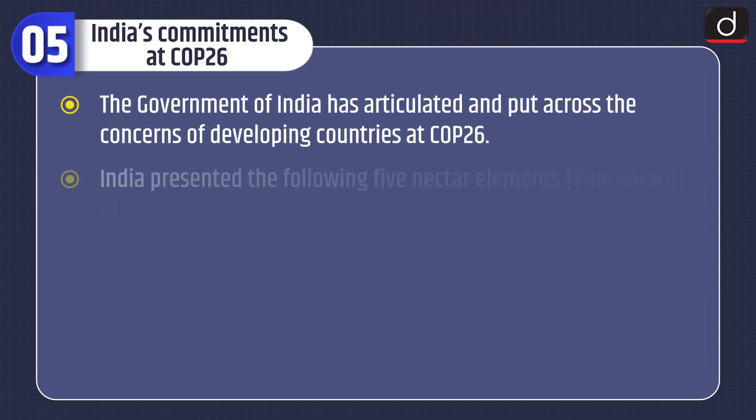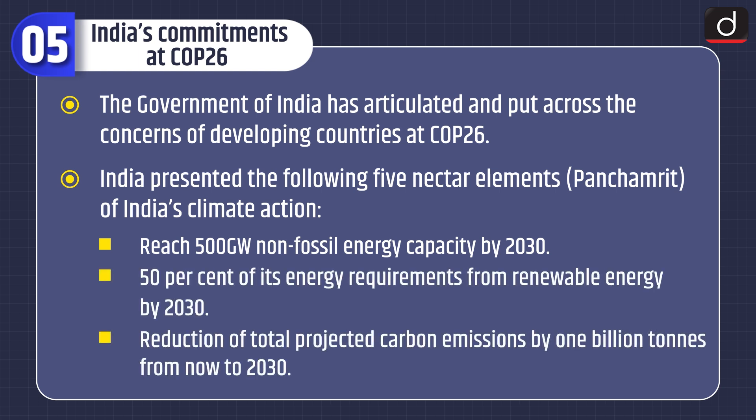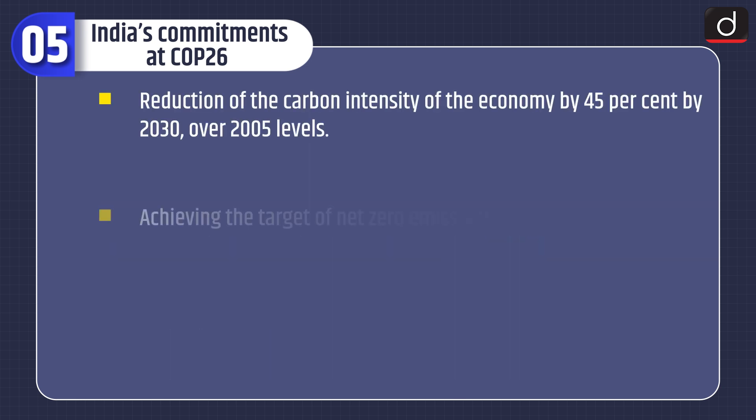Now let's discuss India's commitments at COP26. The Government of India articulated and put across the concerns of developing countries at COP26. India presented five nectar elements — the Panchamrit — of India's climate action: reach 500 gigawatt non-fossil energy capacity by 2030; meet 50% of energy requirements from renewable energy by 2030; reduce total projected carbon emissions by 1 billion tons from now to 2030; reduce the carbon intensity of the economy by 45% by 2030 over 2005 levels; and achieve net zero emissions by 2070.